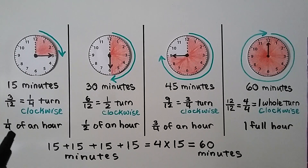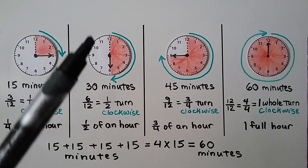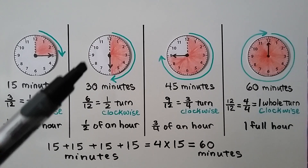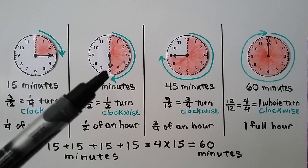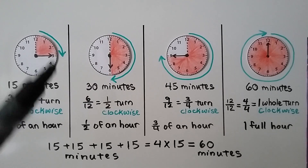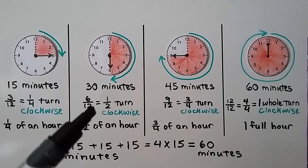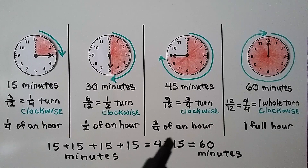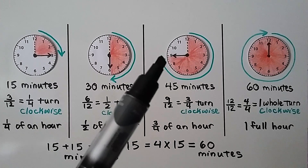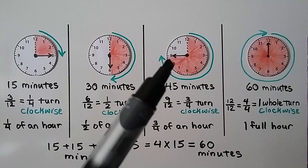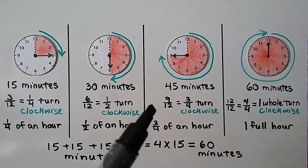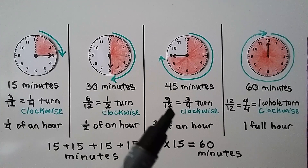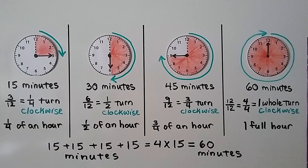Three-twelfths is equal to one-fourth turn clockwise — it's one-fourth of an hour. Thirty minutes: we can see the minute hand pointing to the six, that's six out of twelve equal parts, six-twelfths, equal to one-half turn clockwise — that's one-half of an hour. Forty-five minutes: it's pointing to the nine, nine of twelve equal parts, nine-twelfths, equal to three-fourths turn clockwise, or three-fourths of an hour.